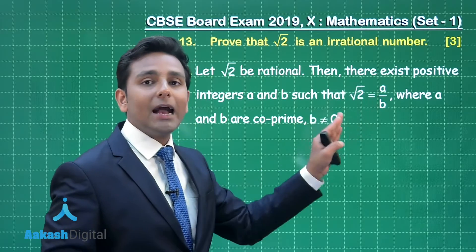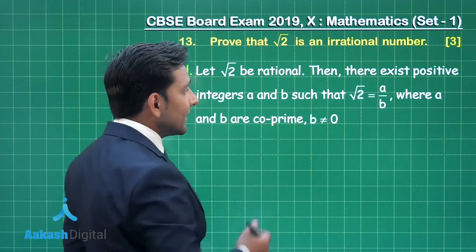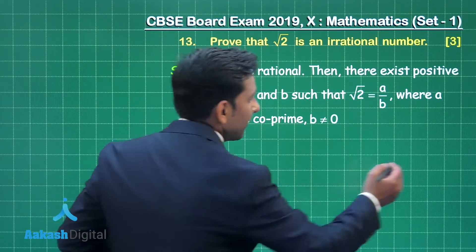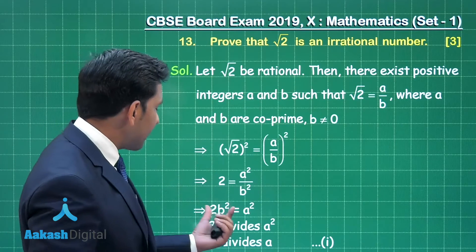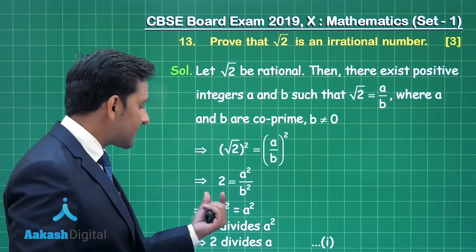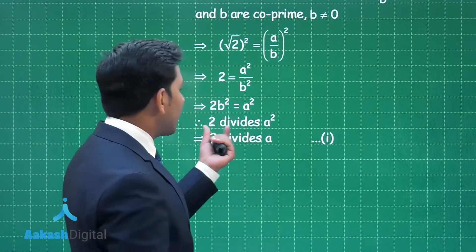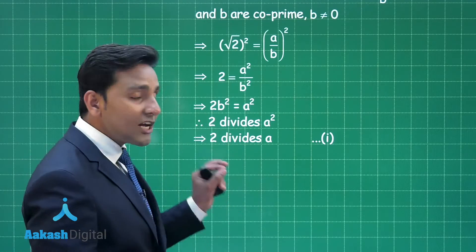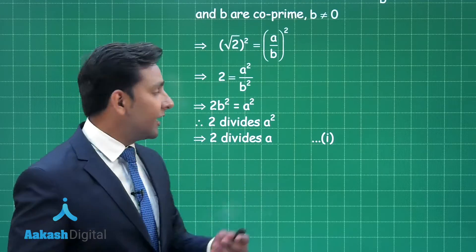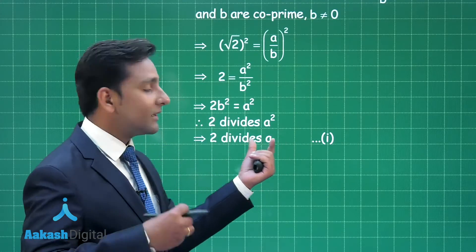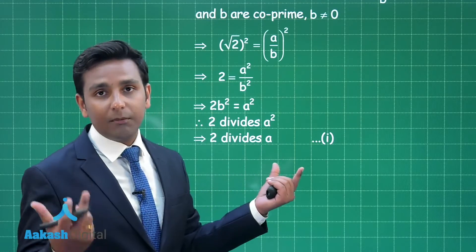That means the HCF of a and b must be 1. Now on squaring both sides of this equation, after further simplification we are getting the relation: 2b² = a². From this relation you can conclude that 2 divides a². In this chapter you have studied a very important concept in the Fundamental Theorem of Arithmetic: if 2 divides a² then 2 will also divide a, meaning a is an even number.